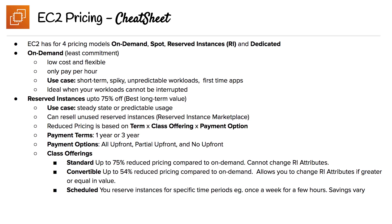For payment terms, we have a one-year or three-year contract. Payment options are all upfront, partial upfront, or no upfront. There are three class offerings: standard, convertible, and scheduled. Standard gives up to 75% reduced pricing compared to on-demand, but you cannot change the instance attributes — if you want a larger instance type, that's not possible. For more flexibility, convertible offers up to 54% off, and you can change attributes as long as they are greater than or equal in value. Scheduled is for reserved instances for specific time periods — for example, running something once a week for a few hours — and savings vary.